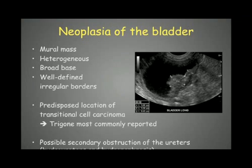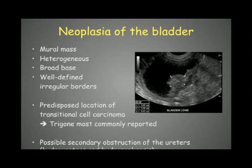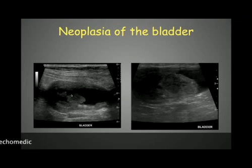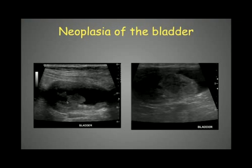Here is one example of transitional cell carcinoma taking up the complete dorsal wall of the bladder. When the neoplasia is at the level of the trigone — at the entrance of the ureters — we can have secondary obstruction of the ureters, leading to hydroureters and hydronephrosis. Here are other examples of bladder neoplasia showing well-defined but slightly irregular surfaces, always attached to the wall with a broad base.